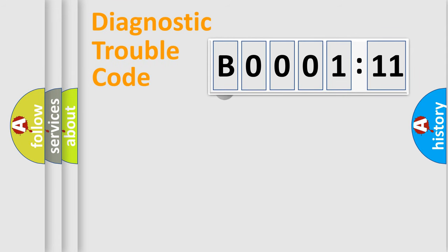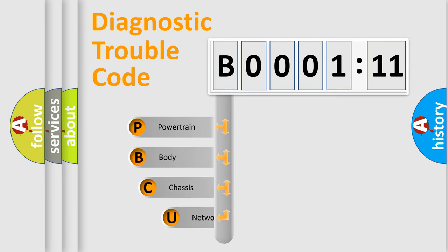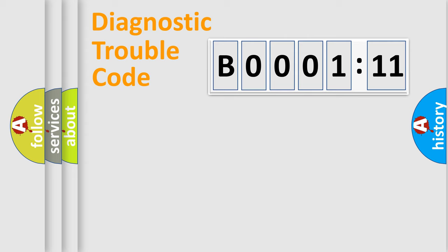First, let's look at the history of diagnostic fault code composition according to the OBD2 protocol, which is unified for all automakers since 2000. We divide the electric system of automobile into four basic units: Powertrain, body, chassis, and network.